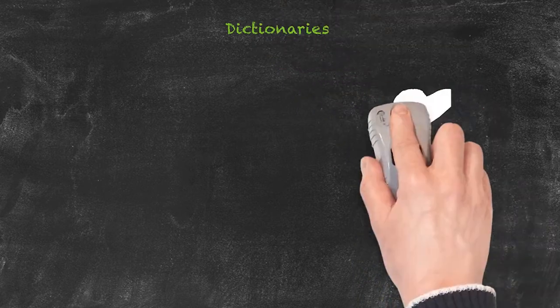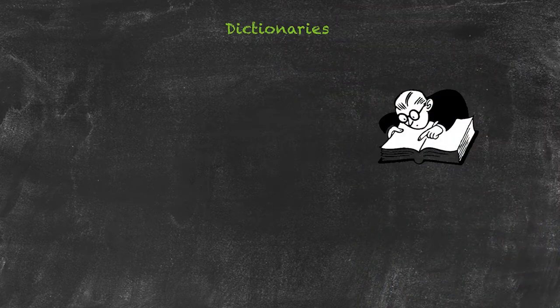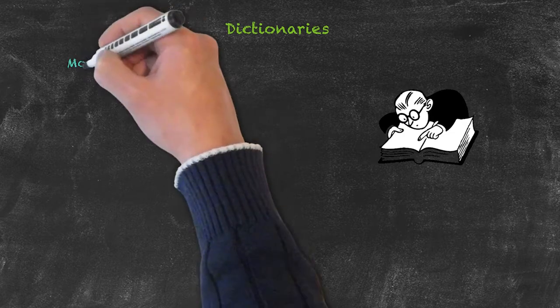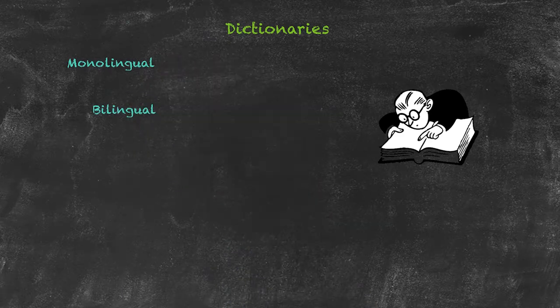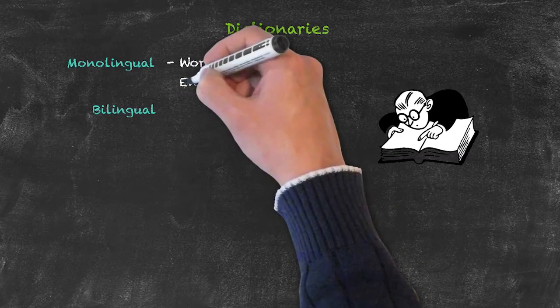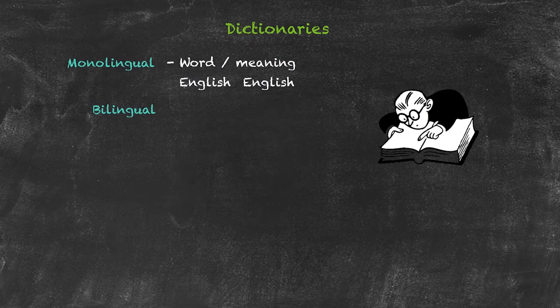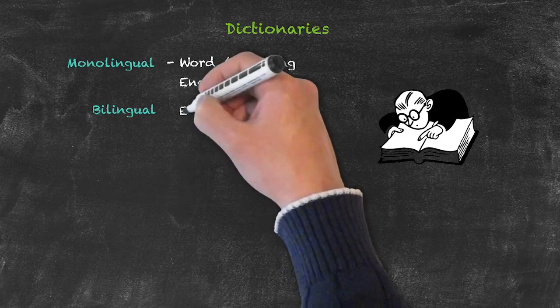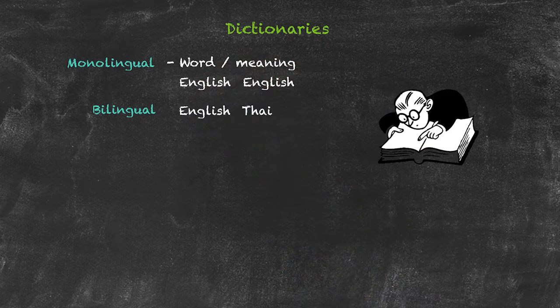The next item we're going to consider is the use of dictionaries. The first thing we should do is make a distinction between the two main types of dictionary: the monolingual and the bilingual dictionary. In a monolingual dictionary, you have a word and its associated meaning, both described in the same language — for example, both in English. Whereas in a bilingual dictionary, the word might be given in English and the explanation in Thai, and vice versa.